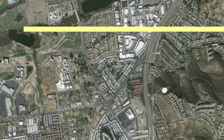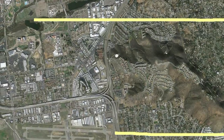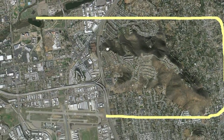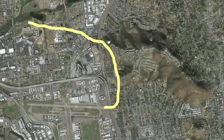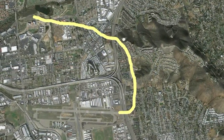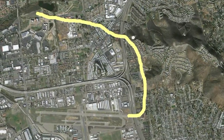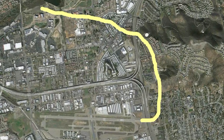The normal traffic pattern for 27R at Gillespie takes us around 1300-foot Rattlesnake Mountain, while the short approach takes us inside the mountain, flying a modified base and short final leg.